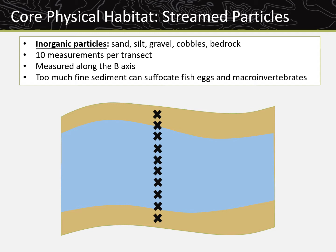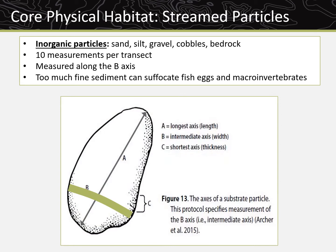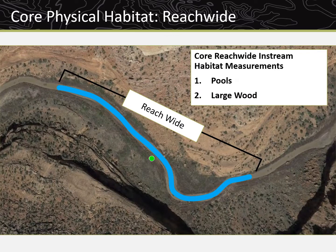The final core PHAB method is streambed particle size, which is measured at all main and intermediate transects. Streambed particles are the inorganic particles including sand, silt, gravel, cobbles, and bedrock that cover the stream bottom. At each transect, 10 particles are measured at even intervals across the stream from scour line to scour line. Each particle is measured along its intermediate axis, which is the b axis. One reason it is important to collect substrate is because numerous organisms live in streambed particles during different parts of their life cycle. For example, too much fine sediment can suffocate fish eggs and reduce habitat for macroinvertebrates.